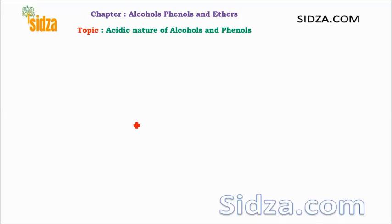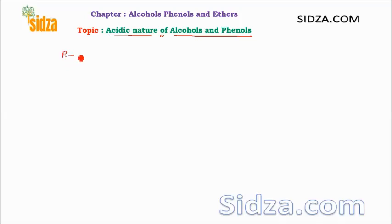Hello friends, welcome to sitza.com. In this video we will learn about the acidic nature of alcohols and phenols. The general formula of an alcohol is ROH, and phenol is an aromatic ring with an OH group.